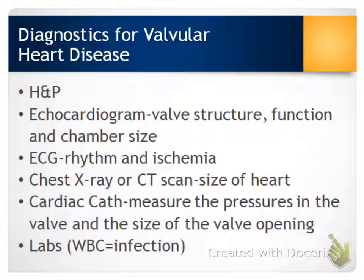There might also be some lab work done. For example, a white blood cell count might be ordered to rule out any type of infection, because if someone has a valve problem, they could be at risk for endocarditis. Conversely, if someone has endocarditis, they are at risk for developing valve problems.